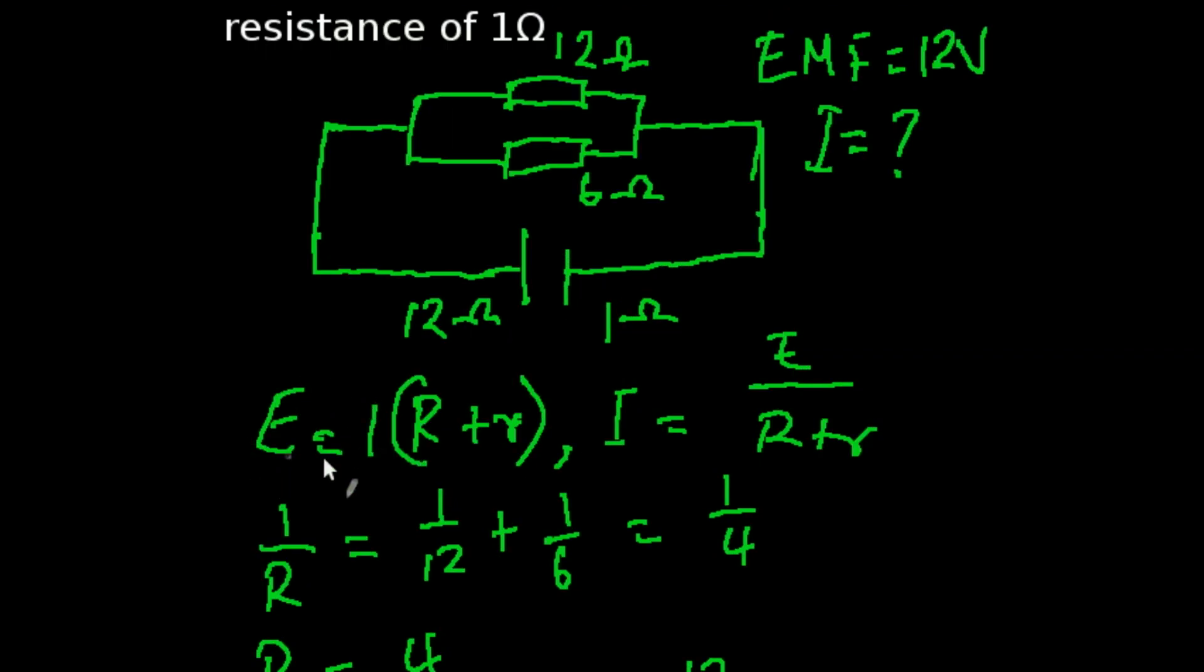We have been given an EMF of 12 volts and an internal resistance symbolized by small r of 1 ohms. So our formula is E equals I multiplied by big R plus small r. This is simply the EMF, this is current, this is our resistance of the cell, and this is for the circuit, and this is our internal resistance of the cell.